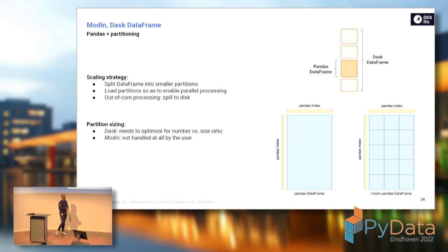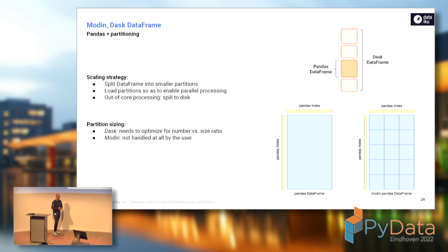A quick word regarding partitions: when it comes to defining how big a partition should be and how many there should be, in the case of Dask you have the ability to fine-tune that, because at a certain scale you'll need to adjust things to optimize performance. Modin took the choice of keeping it transparent and preventing the user from tweaking this too much.